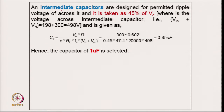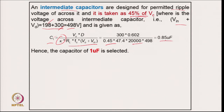Coming to the intermediate capacitor design, permitting a voltage ripple of around 45 percent: the voltage across it is V_in + V_out = 498 V. The capacitor is calculated from the given ripple relation, giving 0.85 μF. A slightly higher value of 1 μF is selected to ensure the voltage ripple is always less than 45 percent.